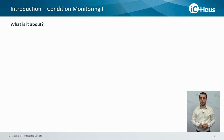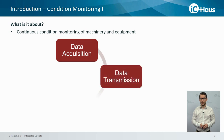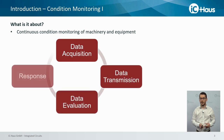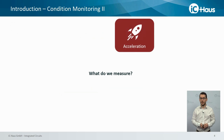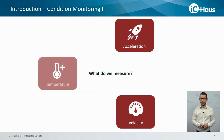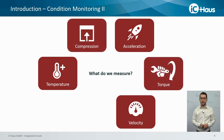So what is it about? It is about the continuous condition monitoring of machinery and equipment. Data is acquired by sensors, transmitted using appropriate protocols, evaluated by a control unit which generates a response to the collected data. Several quantities can be measured in condition monitoring, for example acceleration, velocity, temperature, torque, compression, and filling level.